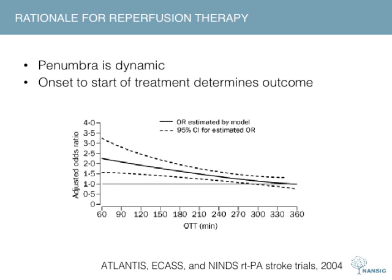Reperfusion therapies are used to restore blood flow to the ischemic area. The rationale is to prevent damage to the penumbra — the area surrounding the core infarct. Unlike the core infarction, damage in the penumbra is dynamic and develops over time, involving complex apoptotic pathways. Intervening early to achieve reperfusion can therefore limit damage to surrounding structures and produce better outcomes. This time-dependent effect is shown in the graph, where shorter onset-to-treatment time is associated with better outcomes at three months.